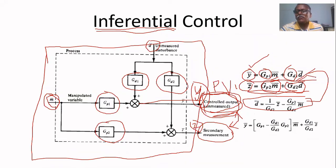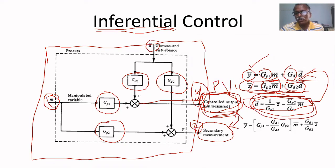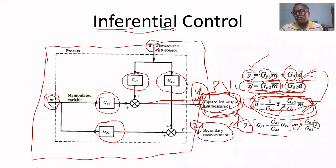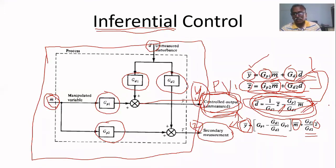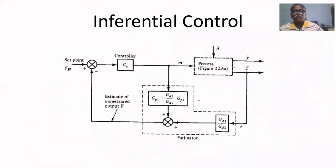Substituting the expression for D into the equation for y, since D is unknown directly, we get y expressed in terms of the manipulated variable m and the measurable variable z — each multiplied by some combination of the transfer function models. This means we are indirectly estimating y; it is not measurement but estimation. From these two expressions we can implement inferential control.